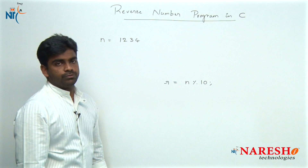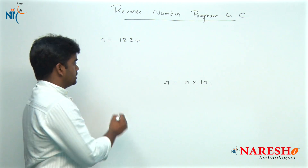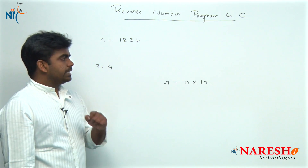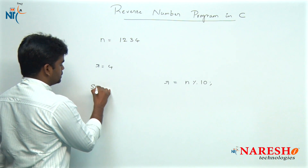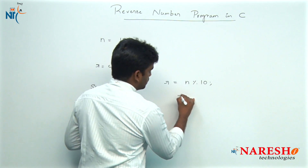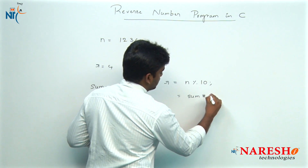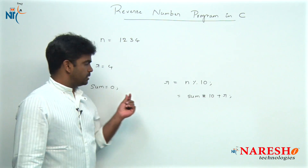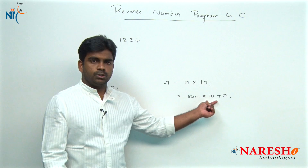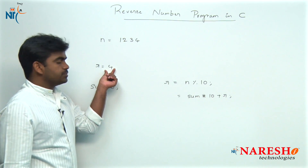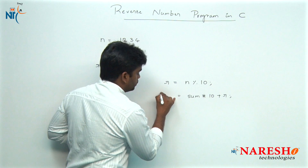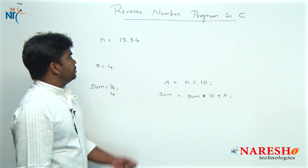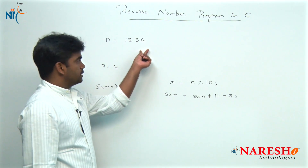Here N value is 1234, and in the first case R equals 4. We declare one variable 'sum' with initial value 0. Sum is calculated as sum multiplied by 10 plus the remainder. So 0 into 10 is 0, plus R which is 4 — sum becomes 4. The last digit has moved to the first position.